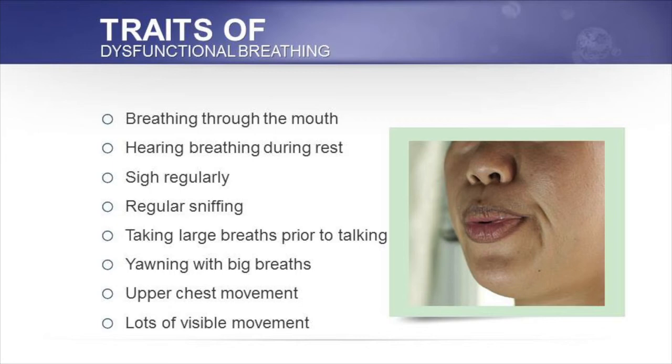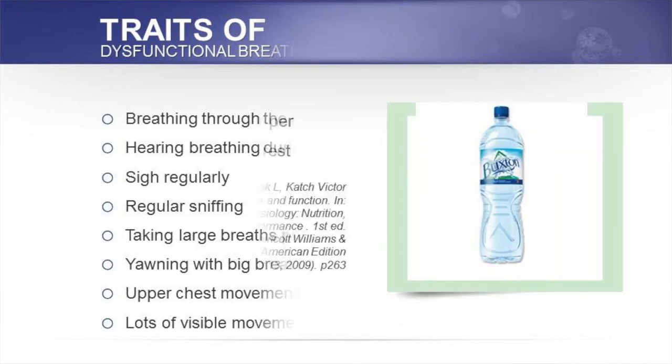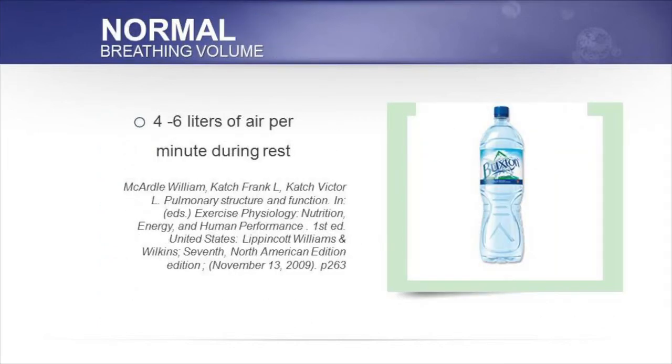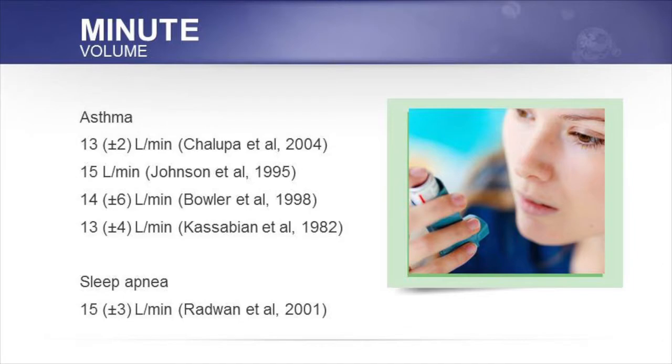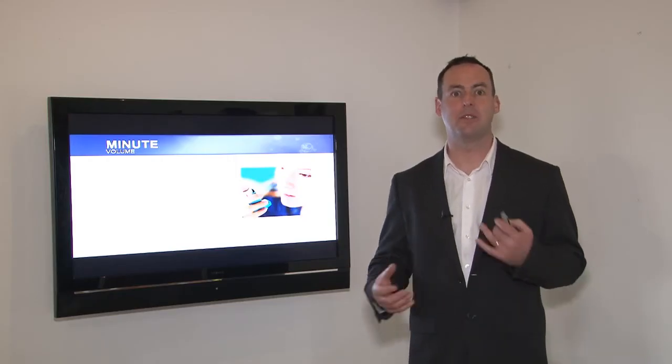Normal breathing volume is four to six liters of air per minute, documented in any medical textbook. This usually equates to ten to twelve breaths per minute, and each breath is about half a liter of air. When we look at the research for people with asthma or sleep disorder breathing and other conditions including chronic heart failure or post-heart attack, breathing volume for people with asthma is between 13 to 15 liters of air per minute. With sleep apnea, 10 to 15 liters per minute. Given that normal breathing is between four and six liters, here's a group of people who are breathing two to three times greater than normal.